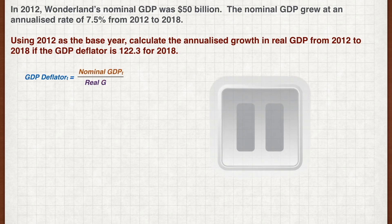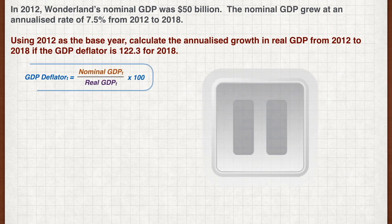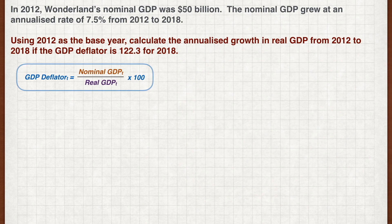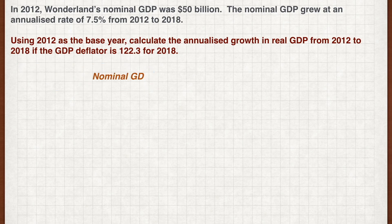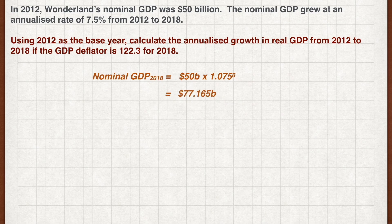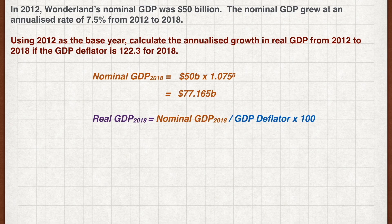Pause the video now and work out your answer. And we're back. First, let's calculate the nominal GDP for 2018. Compounding at 7.5% for 6 years, we get $77.165 billion. Next, we calculate the real GDP using the GDP deflator. Plugging the figures in, we get $63.095 billion.